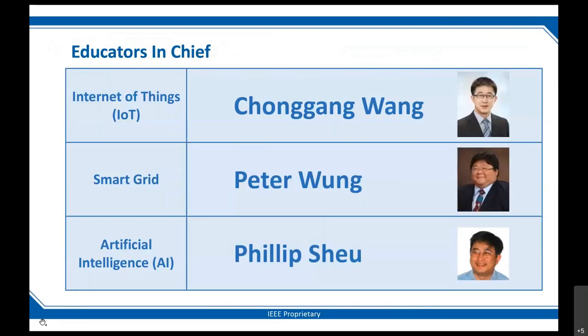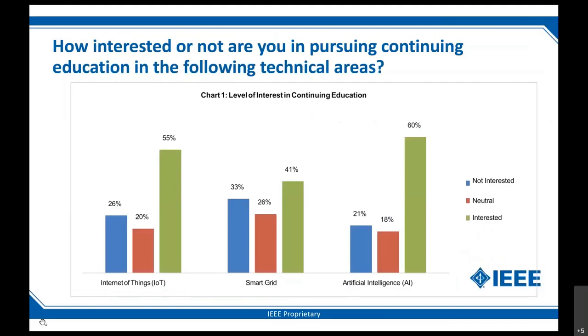We have identified three inaugural Educators in Chief for our initial foray: Haewon for Internet of Things, Peter Long for smart grid, and Phillip Sho for artificial intelligence. These are folks selected from the TAB side — people who've been working with Future Directions or with societies and councils in these three areas. A second survey done this year showed that the three areas we chose rose pretty high in the levels of member interest.